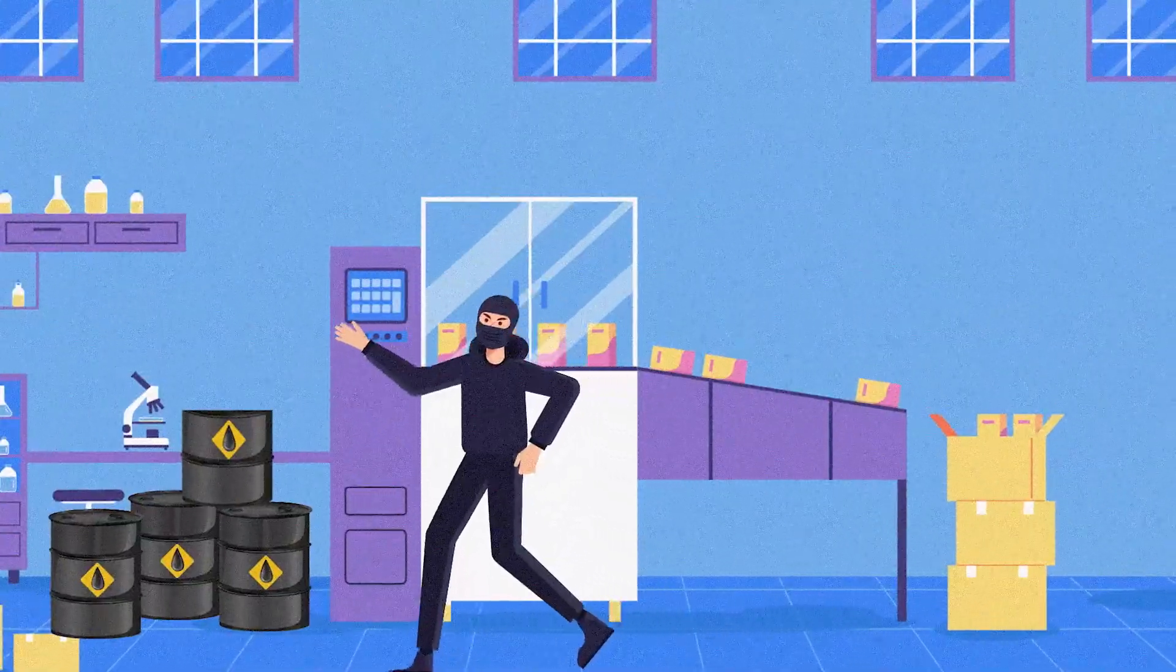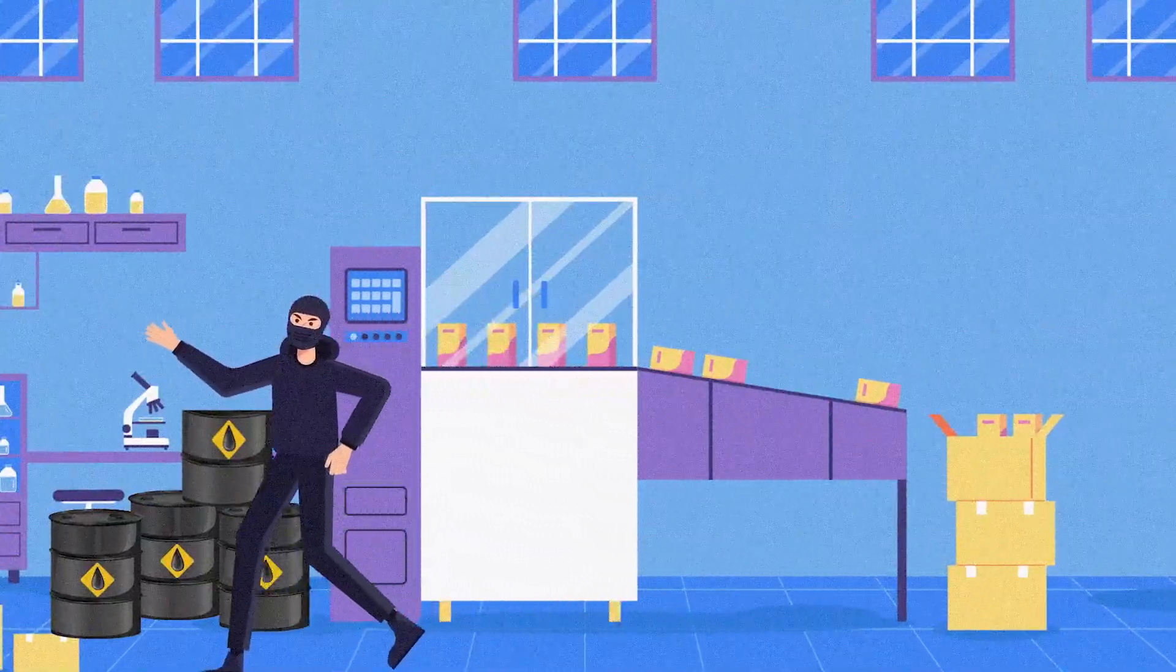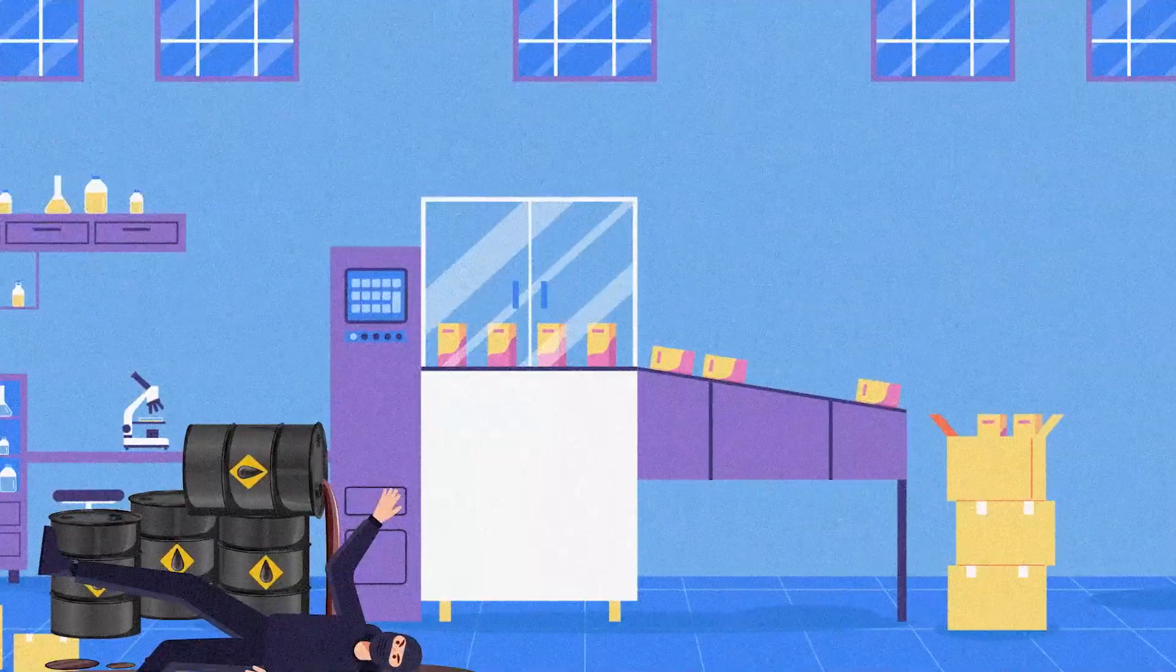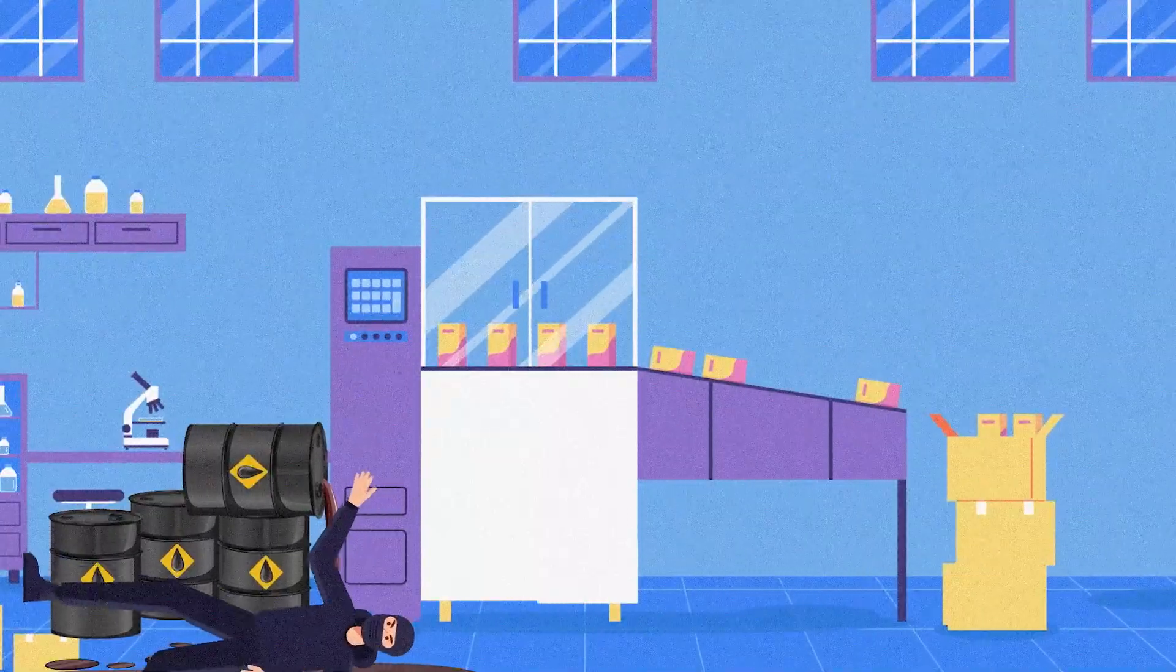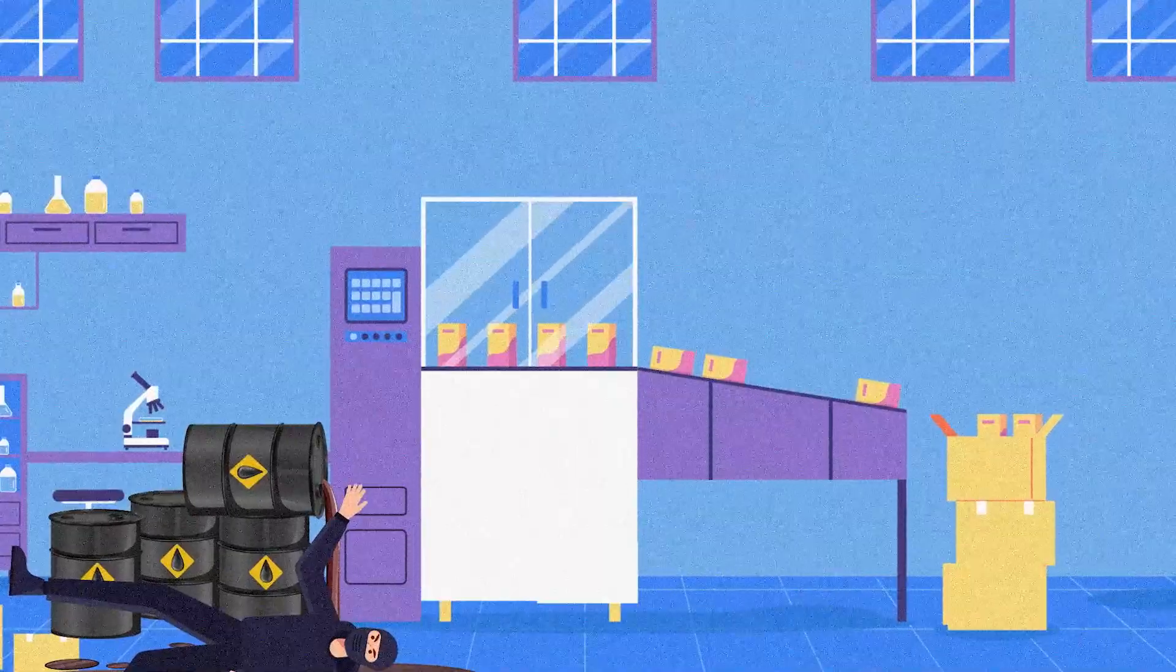He then snuck into the factory and was making his way to the main office when he tripped and knocked over a large container of glue. The glue spilled all over him. He then tried to get up, and he quickly realized that he was stuck to the floor.